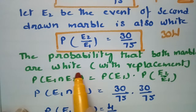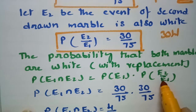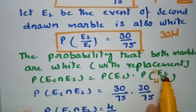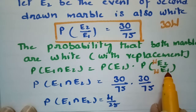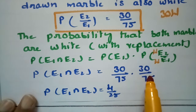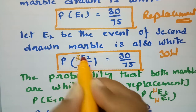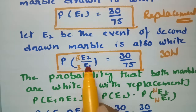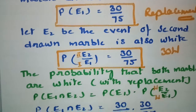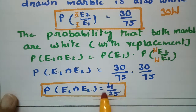The probability that both marbles are white is P(E1 ∩ E2) = P(E1) × P(E2|E1). By the multiplication theorem, this equals 30/75 × 30/75. E2 happens only after E1 — the first marble must be white, and then the second must also be white. Multiplying gives 4/25, so the probability that both marbles are white is 4/25.